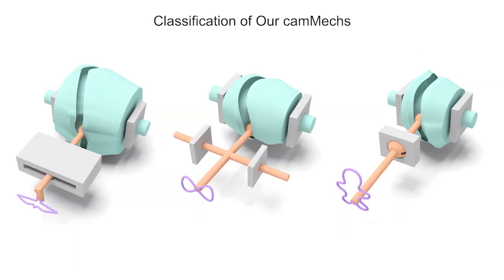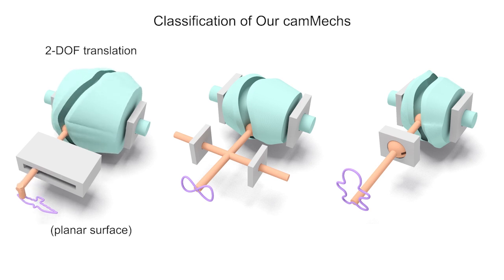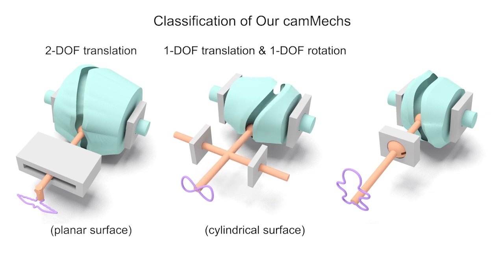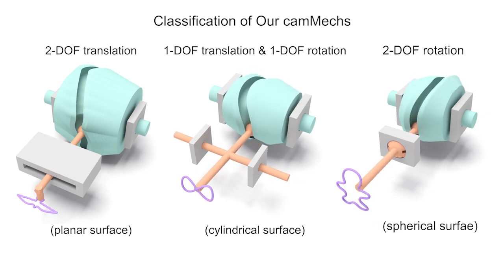Our cam mechs can control three kinds of two DOF motions: translation on a planar surface, translation and rotation on a cylindrical surface, and rotation on a spherical surface.